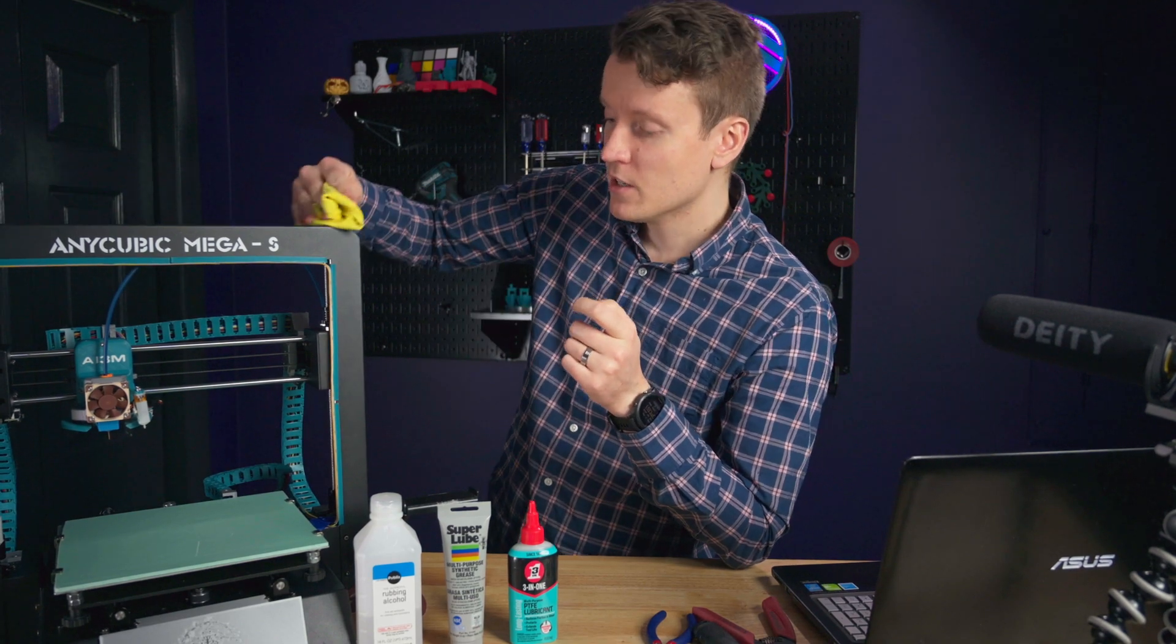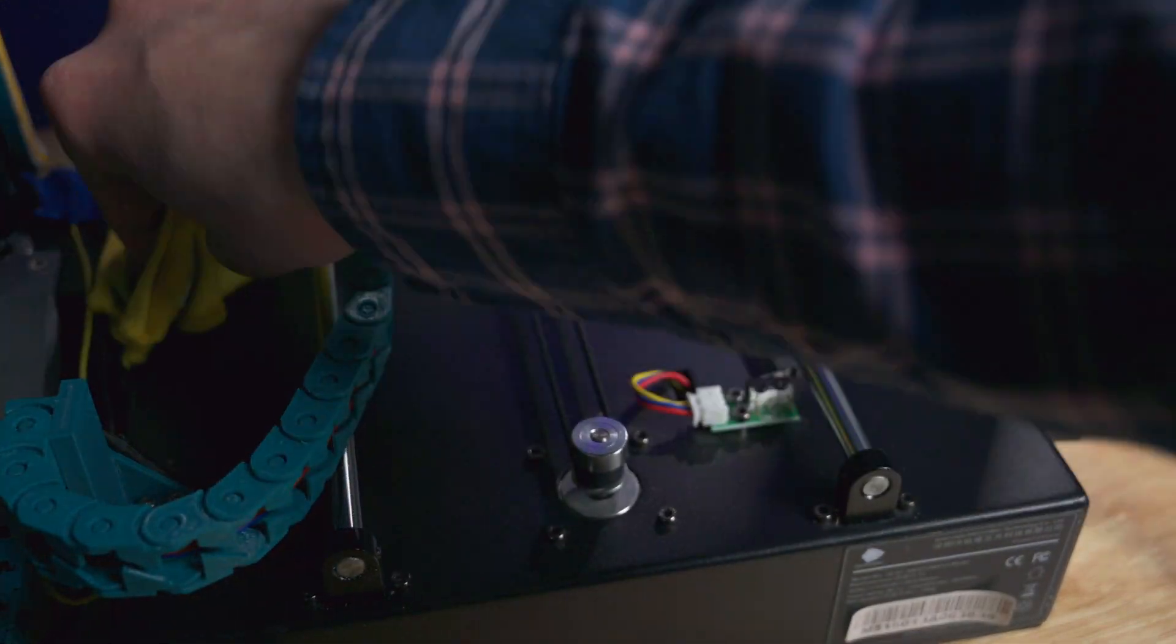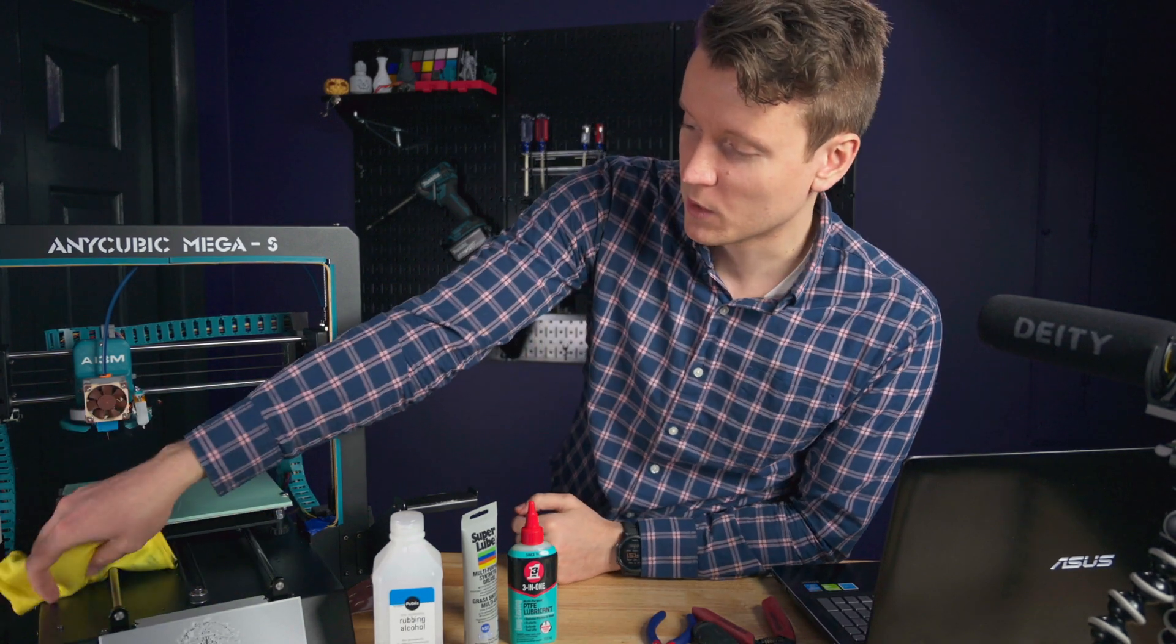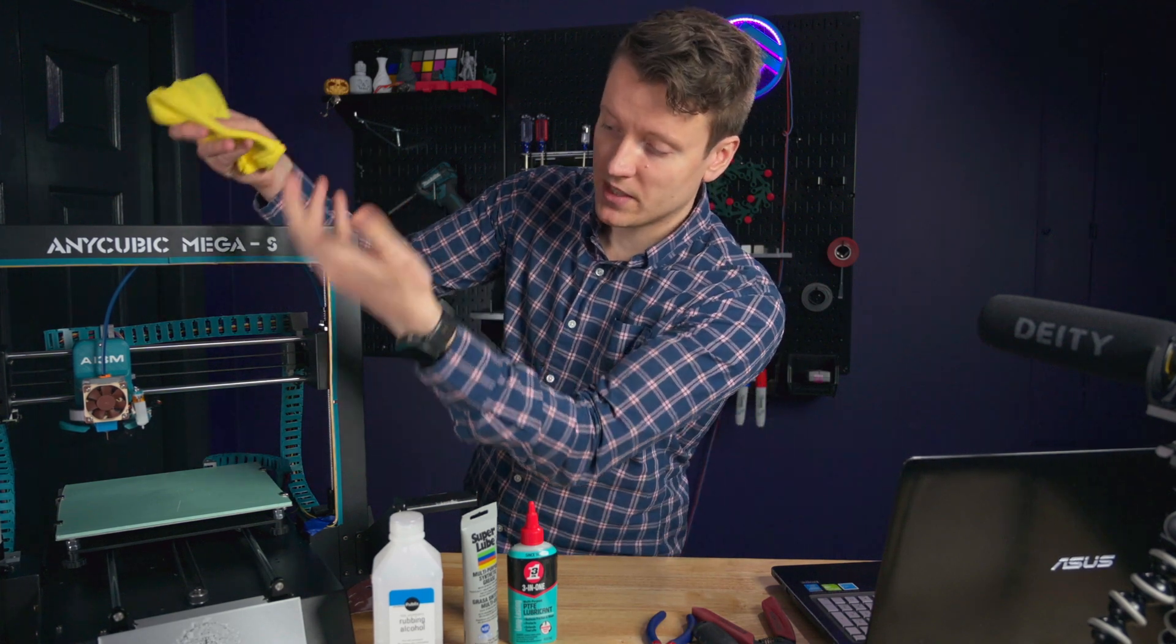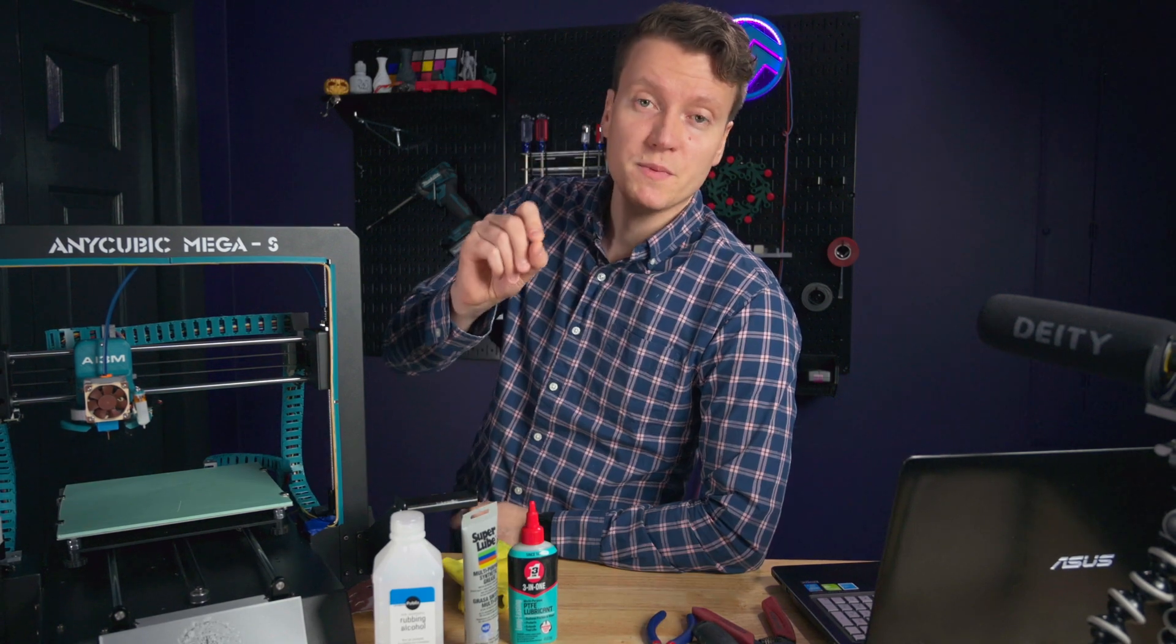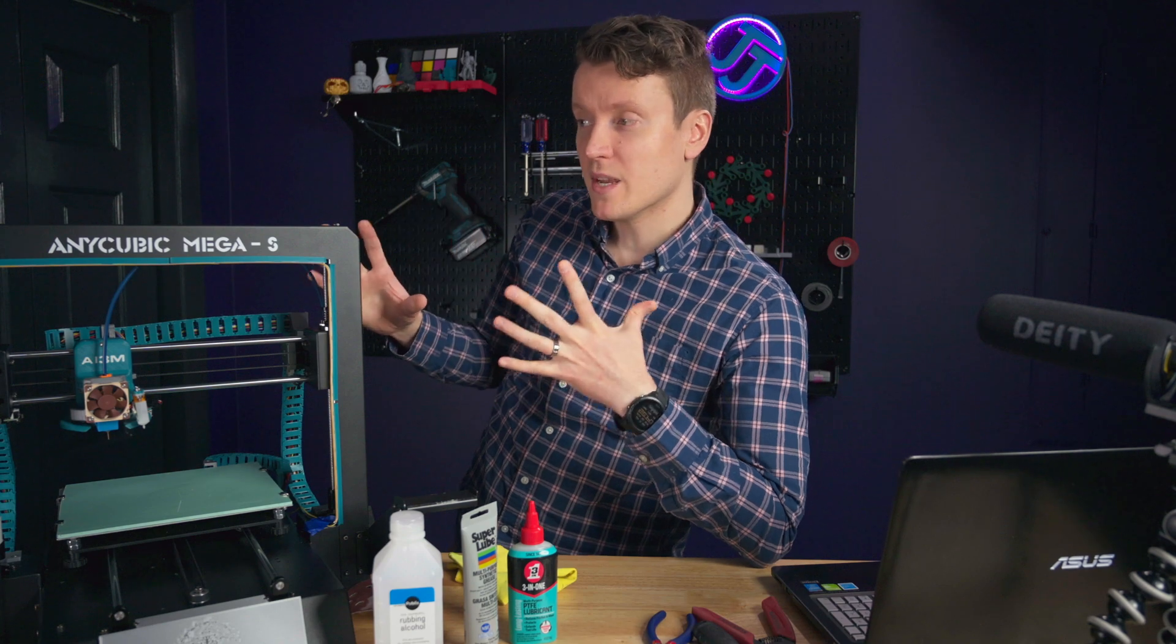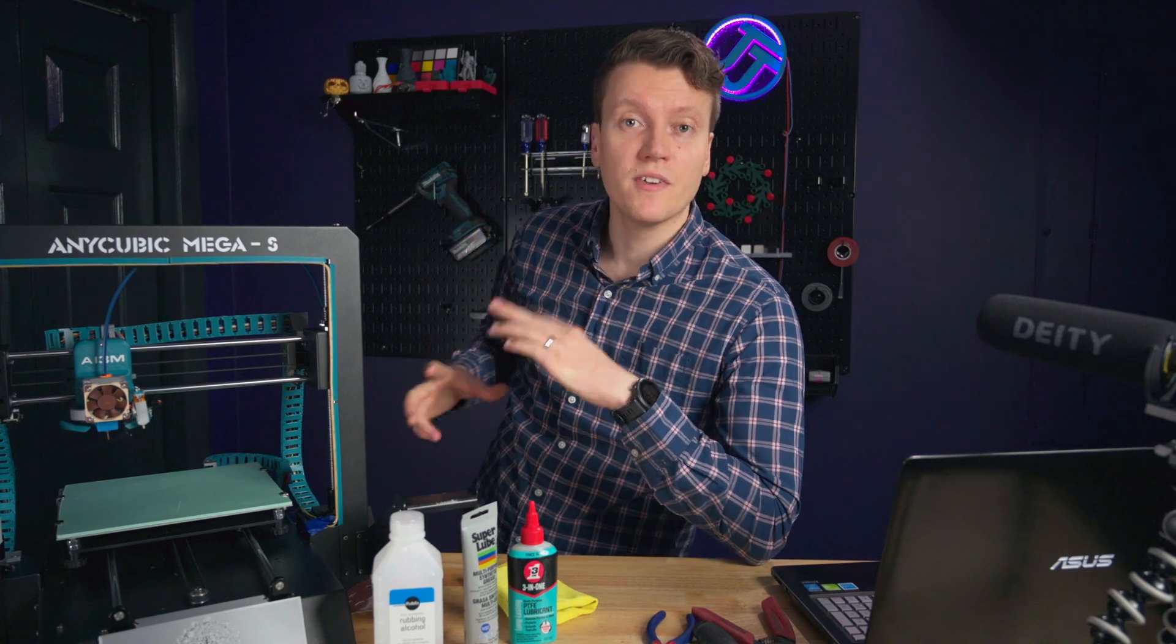So the first step is to dust things. Using a paper towel or a microfiber, just simply wipe things down. Move the bed out of the way, clean underneath the bed. If things are really gunked on, you can use just some general purpose cleaner or some rubbing alcohol. I use IPA for a lot of things on the printer, so we're going to be using that.